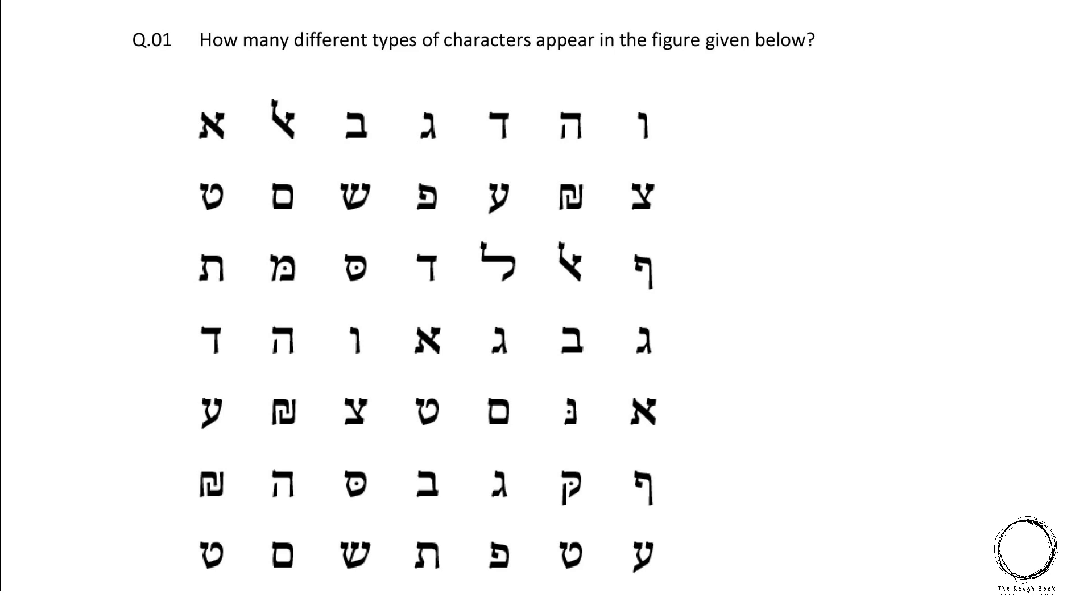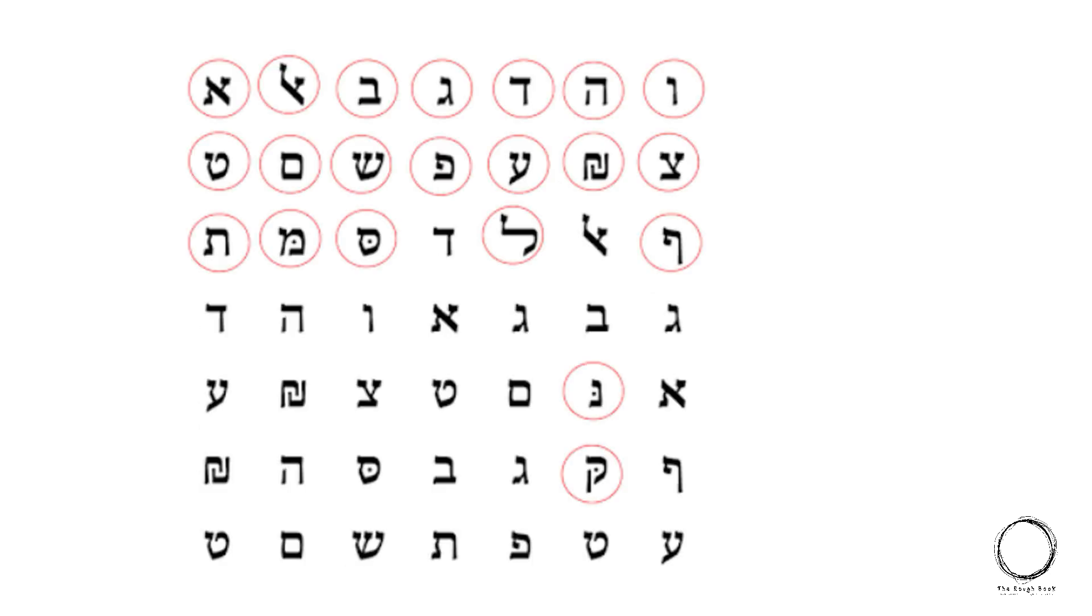Start from the top row and after you complete the top row, move to the next row and so on. See if the symbol that you are checking had appeared in the previous rows. If so, then count it. So here is the answer. That is 21 different types of characters are there in the figure given below.